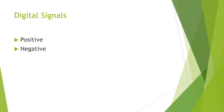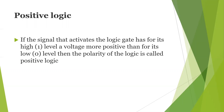A digital signal has two discrete levels or values. Two different representations of digital signals are positive logic and negative logic. We will see about positive logic. If the signal that activates the logic gate has for its high one level a voltage more positive than for its low zero level, then the polarity of the logic is called positive logic.